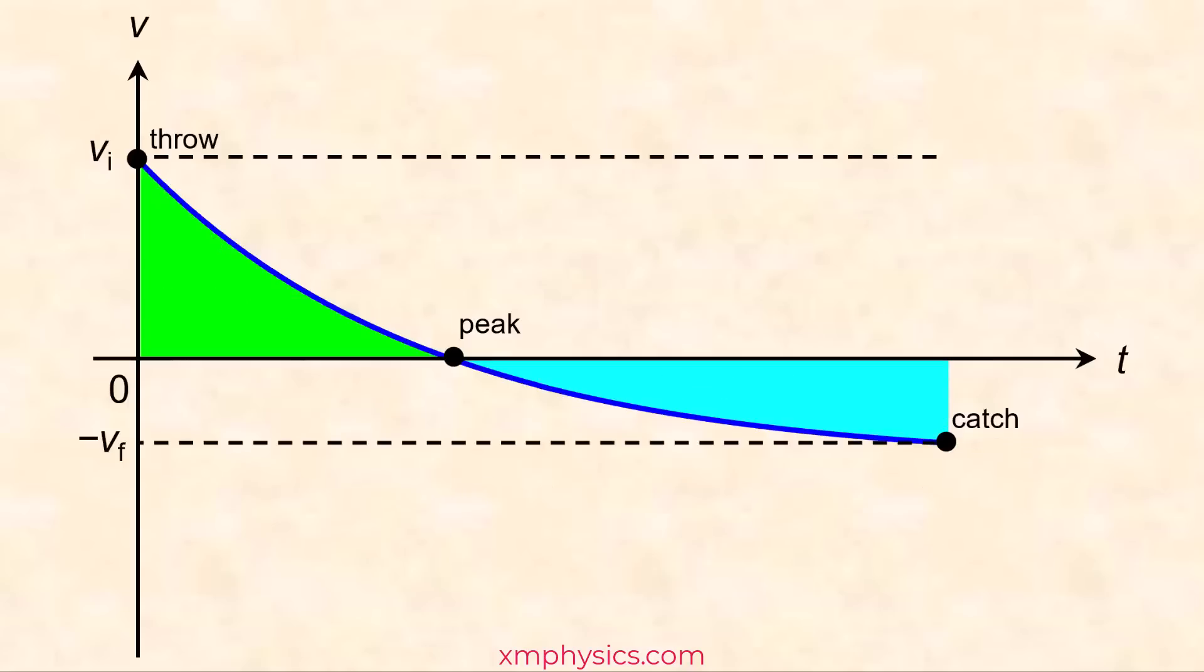Also, the ball returns to the hand at a speed that's lower than when it left the hand. Again, this makes sense because there's KE loss to air resistance. All right, we are done with the VT graph.